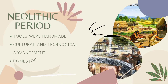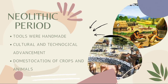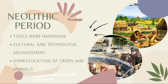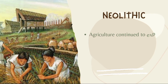The third subcategory of the Stone Age is the Neolithic period, or the New Stones. This is the period where cultural and technological advancement was based on agriculture. They started to grow different kinds of crops like rice, corn, beans, and other crops. They also practiced what we called breeding and domestication of animals such as goats, cattle, sheep, pigs, and other animals.